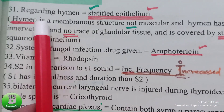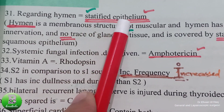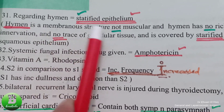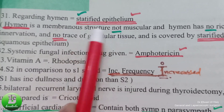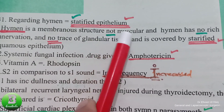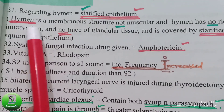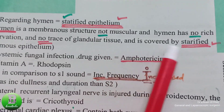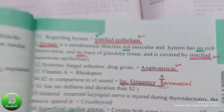Regarding the hymen, it is stratified squamous epithelium. The hymen is a membranous structure — it is not muscular, has no rich innervation, no trace of glandular tissue, and it is classified as stratified squamous epithelium.